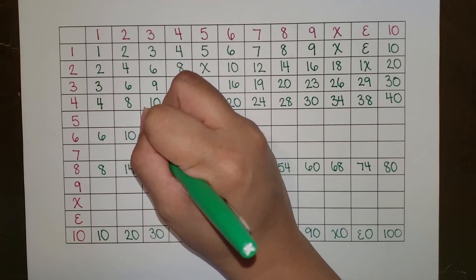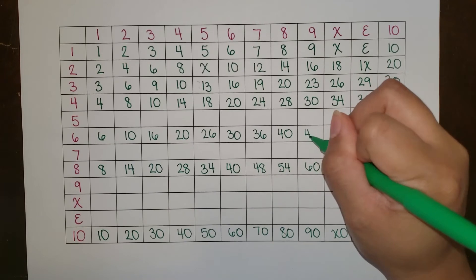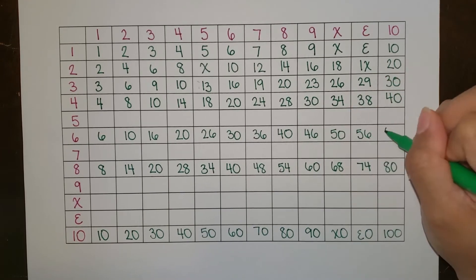When looking at the sixes, it alternates six, zero, six, zero. This is very similar to how the multiples of five work in base ten.